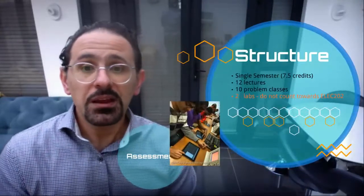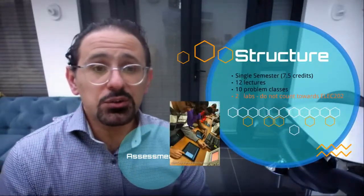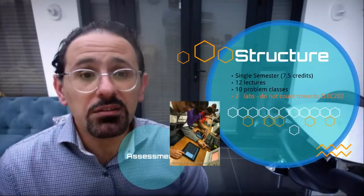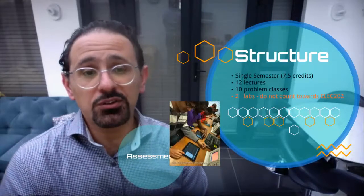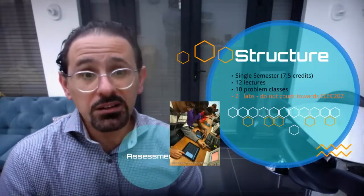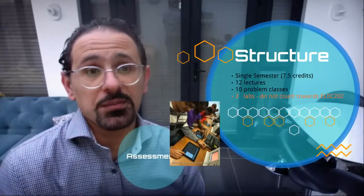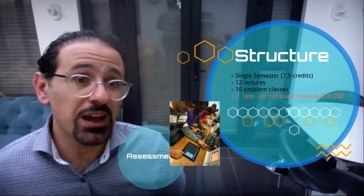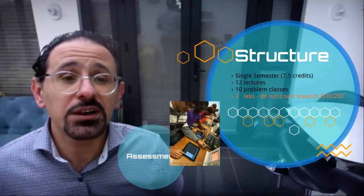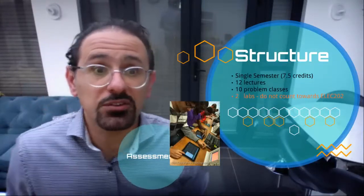So that's a brief bit of background. The structure of the module is similar to your signals and systems last year with a few key differences. So it's a seven and a half credit module, so there's less content, but I still have 12 lectures to give.